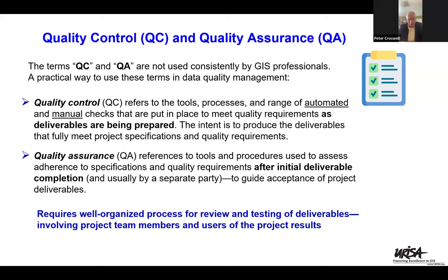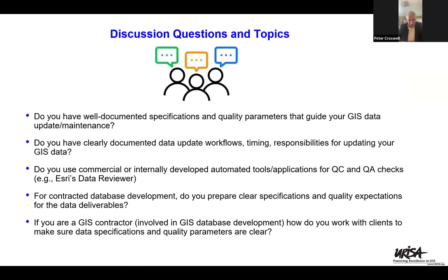A brief note on quality control versus quality assurance — these are often used as synonyms but I prefer to differentiate them. Quality control: a contractor hired to do a sign inventory performs both manual and automated checks in preparing deliverables. Quality assurance: as a municipality project team, you perform additional checks using automated and manual tools to assure data quality, resulting in either acceptance or rejection and return to the contractor. It all comes down to documenting those parameters and quality specifications. Documents illustrating these concepts will be provided to all attendees.